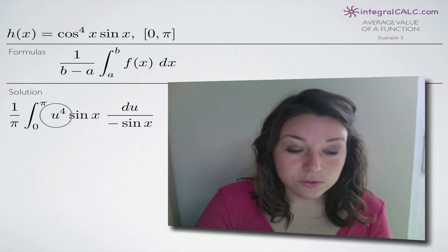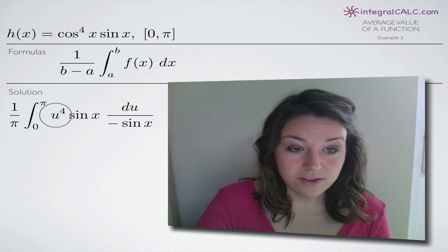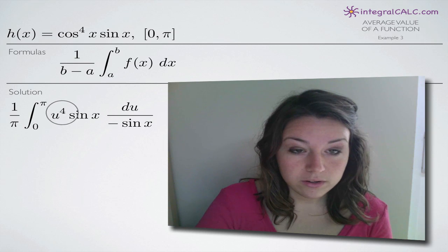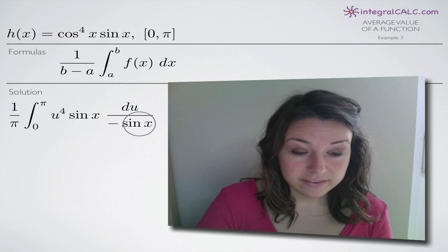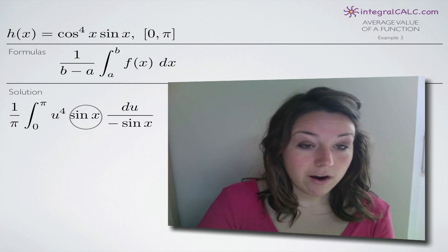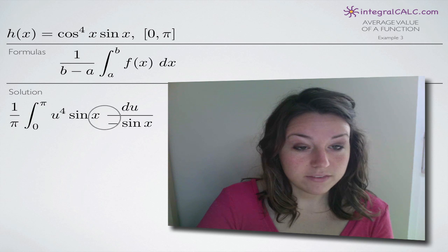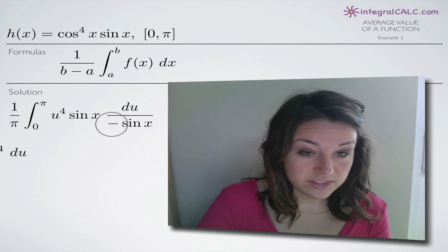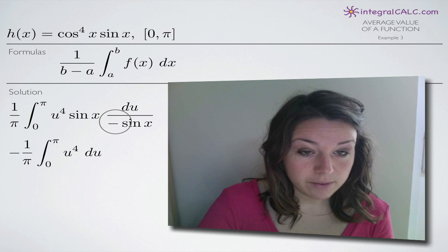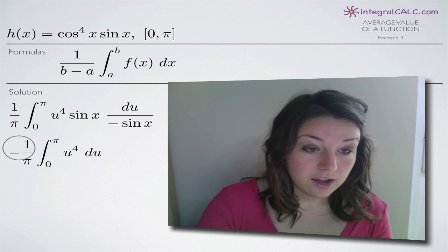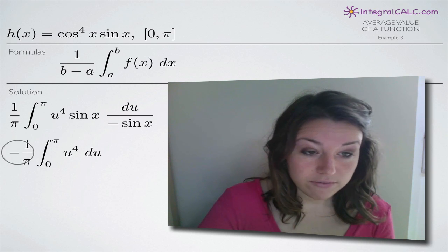We've put u in for cos of x with the fourth power, and du over negative sin of x in for dx. We are going to get the two sin of x terms to cancel — we just have to pull this negative one in the denominator out in front. So this negative one comes out in front of the integral.